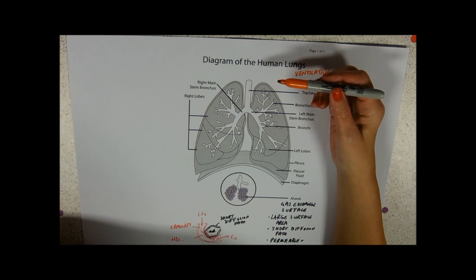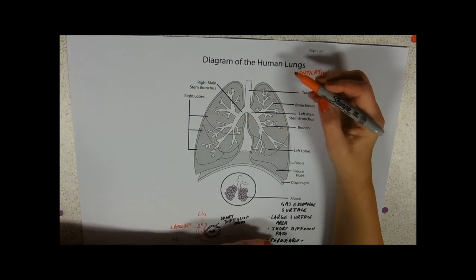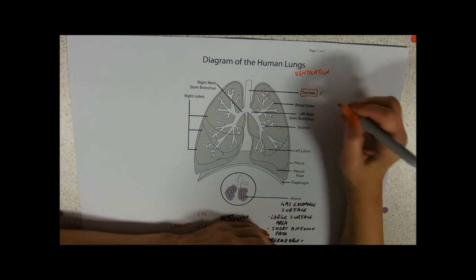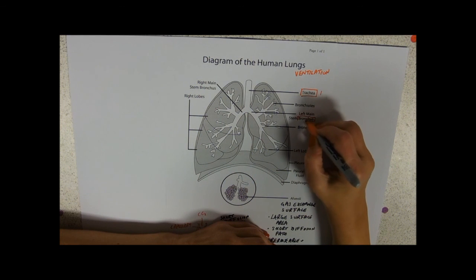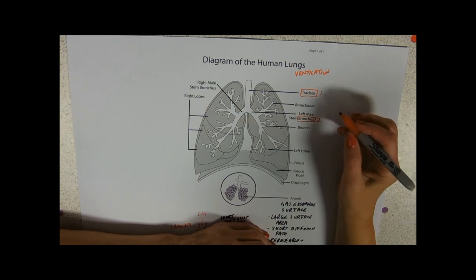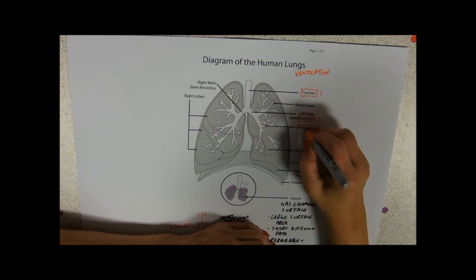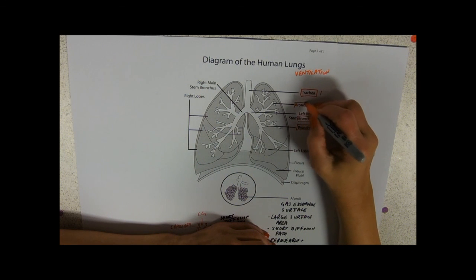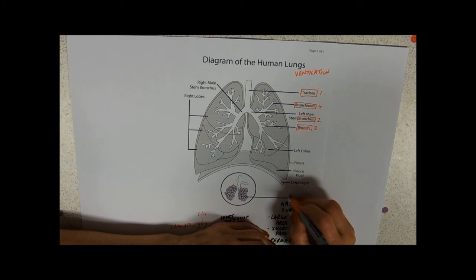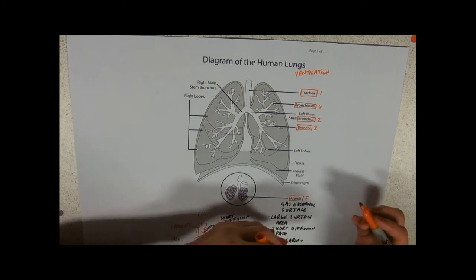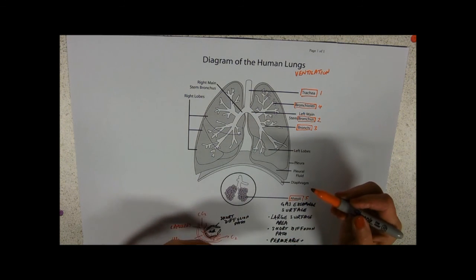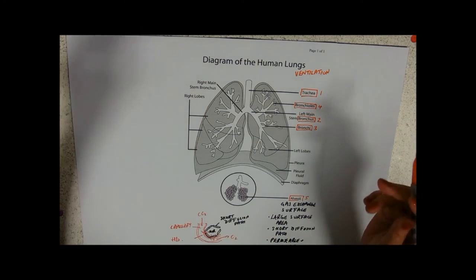From your mouth or your nose, the air goes down through your trachea, then into a bronchus. Notice there are two, one for each lung. Then into bronchi, which are little branches, then into bronchioles, and eventually they end up at the alveoli. That's the flow of air through. On the way back, it's going to go alveoli, bronchioles, bronchi, bronchus, trachea, out into the atmosphere.